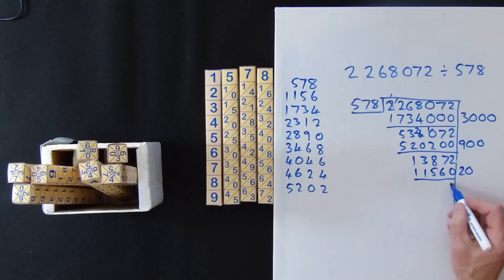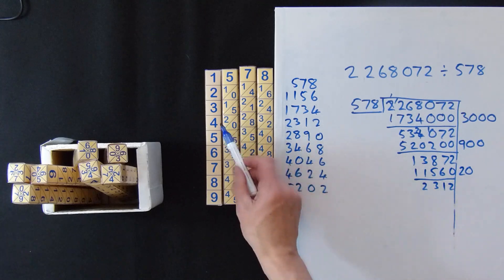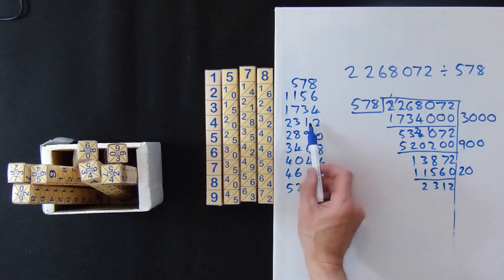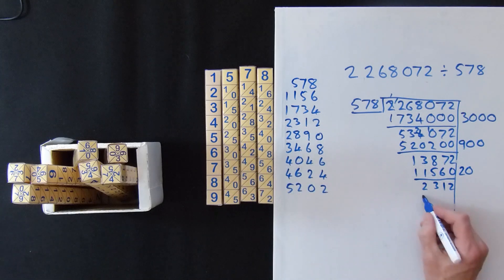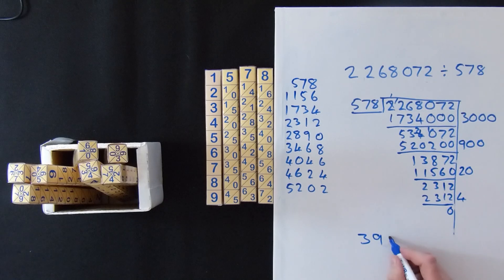Take away again, we've got 2, 1, 3, 2. Look down through and you'll see 2, we get exactly this time, 2312 is the 4. So we're taking away 2312 which is 4 and we get 0. So our final answer is 3924.